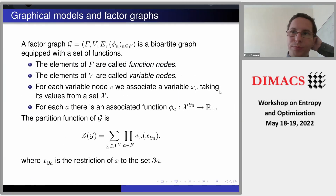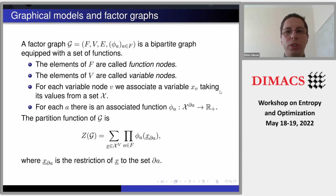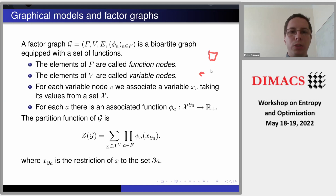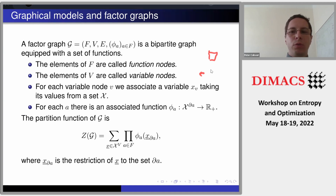Let's introduce factor graphs. Factor graphs have two kinds of nodes: function nodes and variable nodes. Function nodes will be denoted by a little square, and variable nodes will be little circles. For each variable node, there is an alphabet from which it takes values — like in the Ising model it's plus and minus one, in the hardcore model it's occupied or unoccupied, and in the coloring model it's the q colors. For each function node, there will be a function which evaluates the whole quantity.